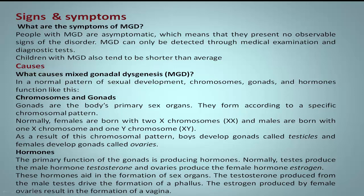Males are born with one X chromosome and one Y chromosome (XY). As a result of this chromosomal pattern, boys develop gonads called testicles and females develop gonads called ovaries. The primary function of the gonads is producing hormones.